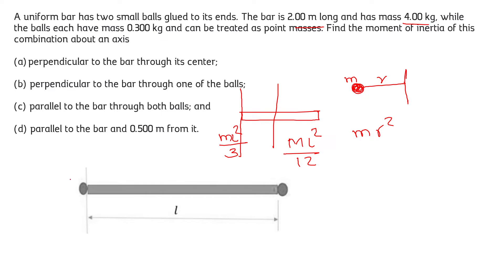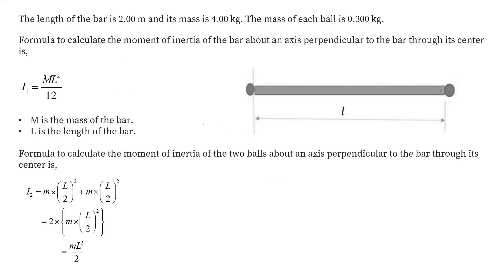Since the balls are point masses, they do not have any radius about their own center. Now let's find the moment of inertia perpendicular to the bar through its center. The moment of inertia of the bar itself about its center perpendicular to its length is ml square by 12.